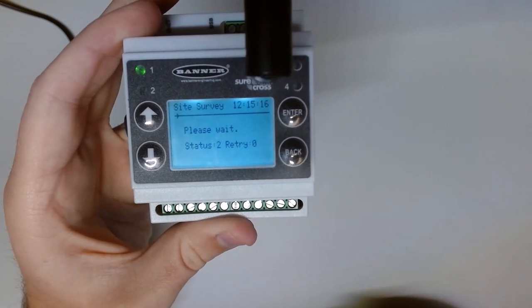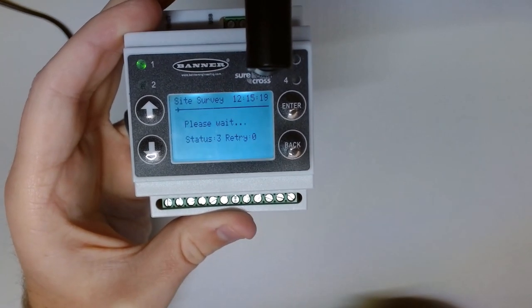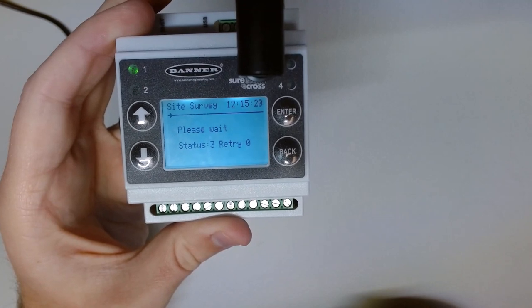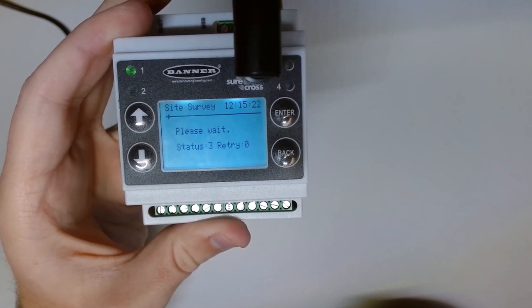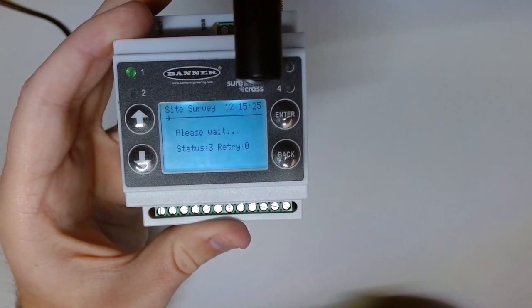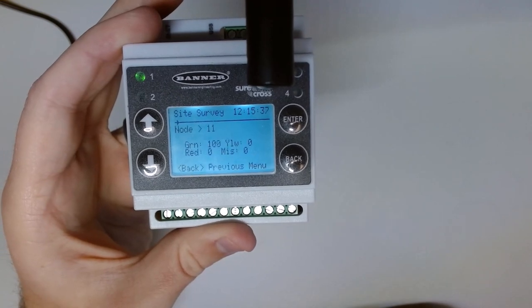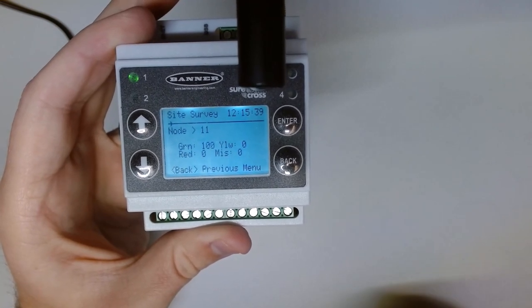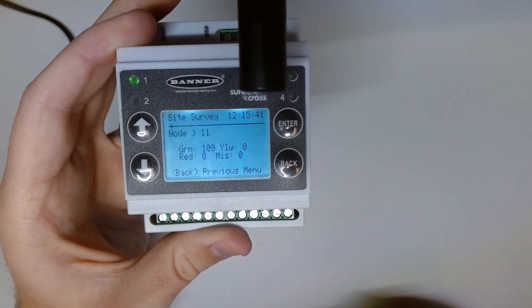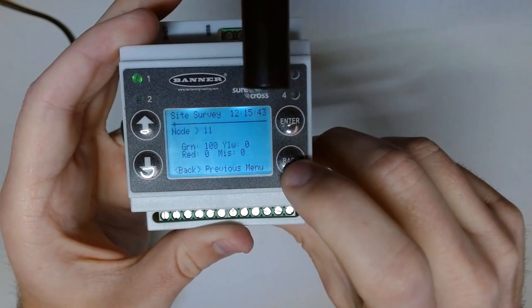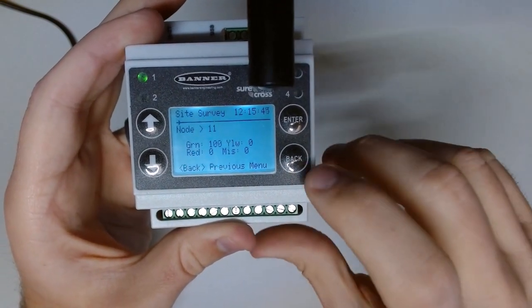It's again the same, about 15 to 20 seconds, and then it'll report similar results to us on the green, yellow, red, and missed. And in this case, we were able to get 100 green, zero yellow, zero red, and zero missed.